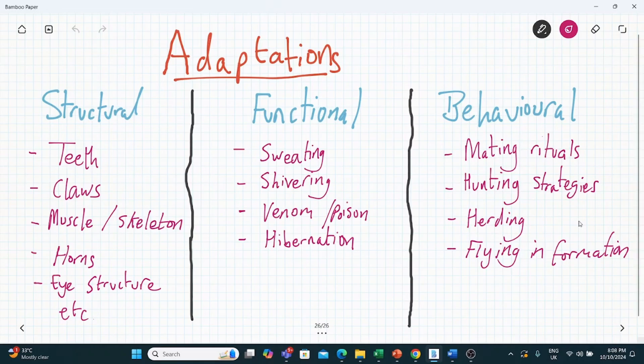Sometimes you can have adaptations which are sort of both. For example, if you have a cactus like this, this could be both an example of a structural adaptation, because clearly it's a physical structure, but also because it reduces water loss, you can actually also count it as a functional adaptation.